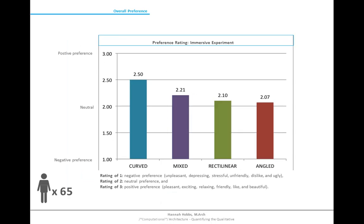Alright, time for the results. 80 students, faculty, and staff from the New School were approached to participate in this experiment, though 15 were removed from data analysis due to potential bias from previous knowledge of the study. As hypothesized, preference was higher for the curved environment. Furthermore, as the amount of curvature decreased and angles increased, the data shows preference drops.